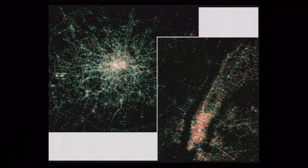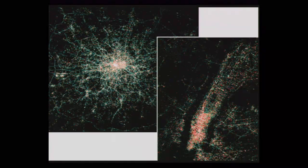Every city has a unique fingerprint and some of them are actually very beautiful. London is what you're seeing on the left there — the spider's web-looking one. The one on the right is actually New York. Manhattan — you can see Central Park, the darker spot in the middle there.